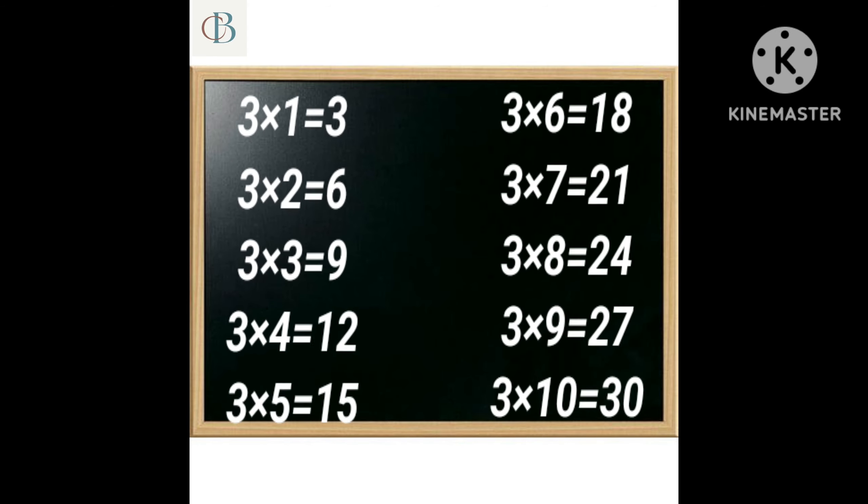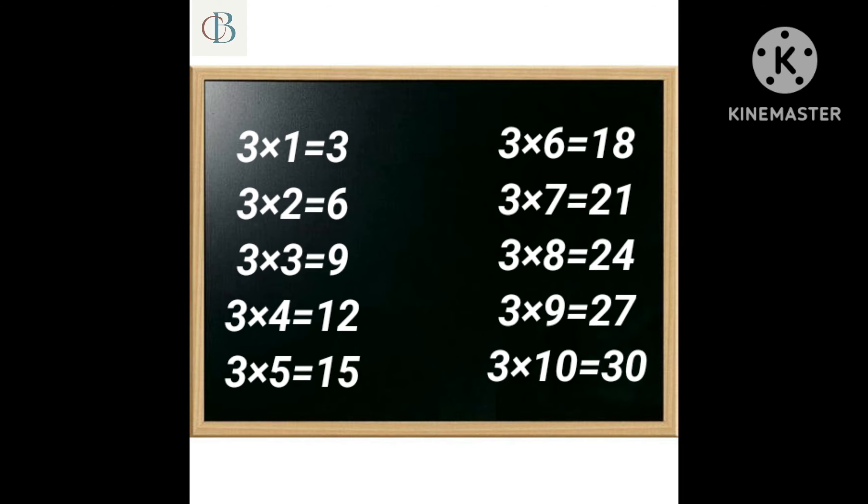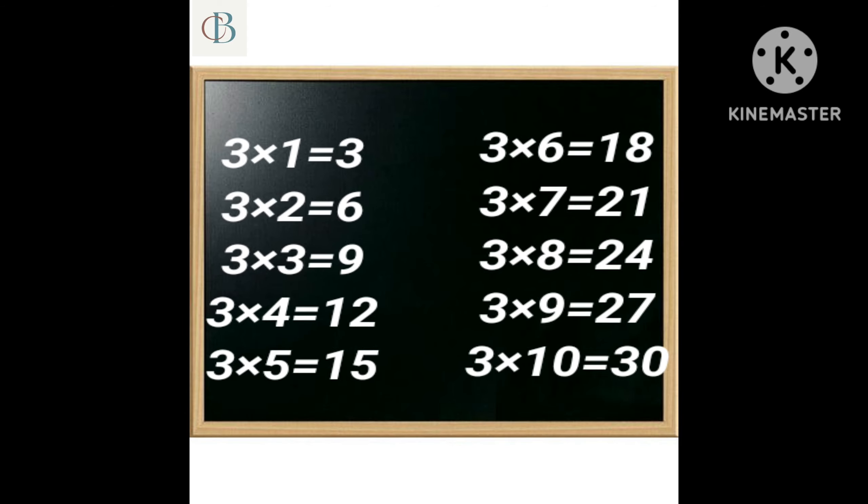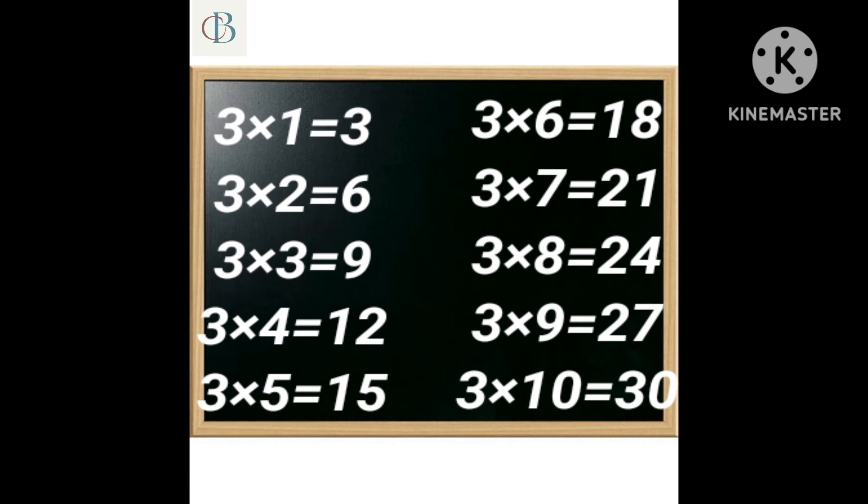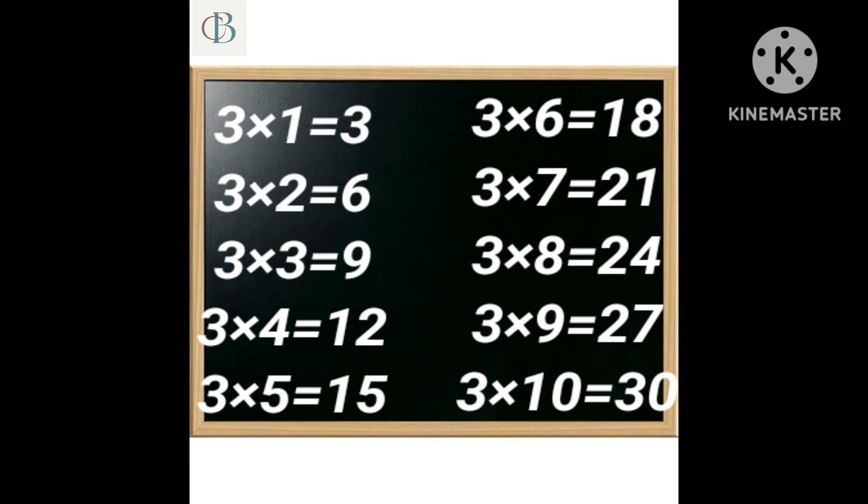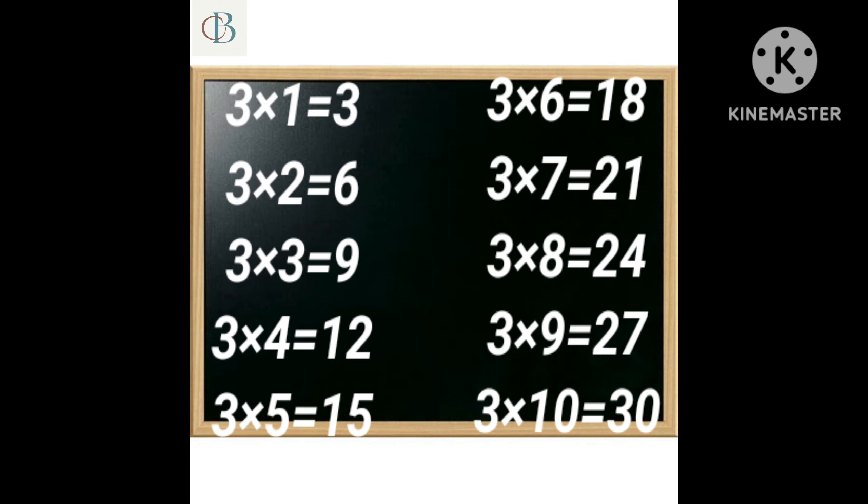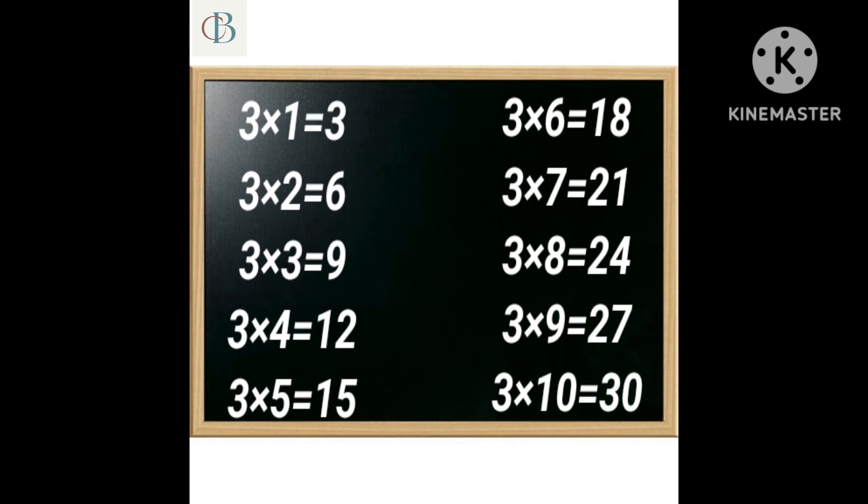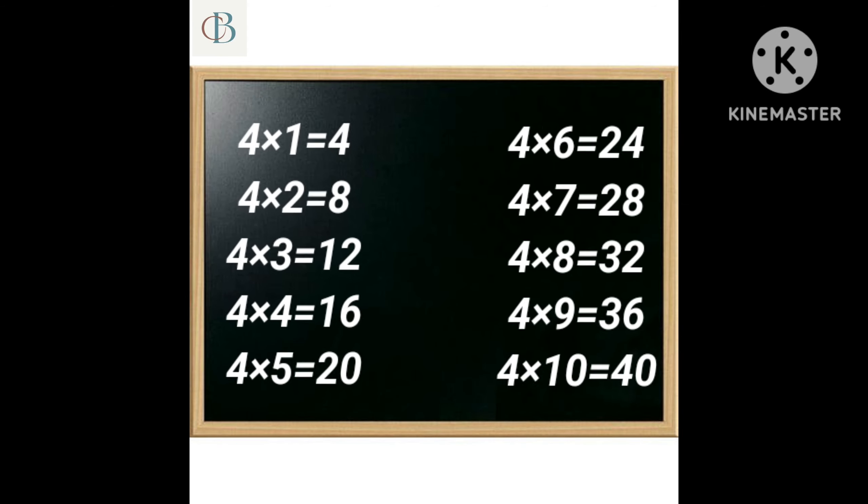3 1s are 3, 3 2s are 6, 3 3s are 9, 3 4s are 12, 3 5s are 15, 3 6s are 18, 3 7s are 21, 3 8s are 24, 3 9s are 27, 3 10s are 30. 4 1s are 4,